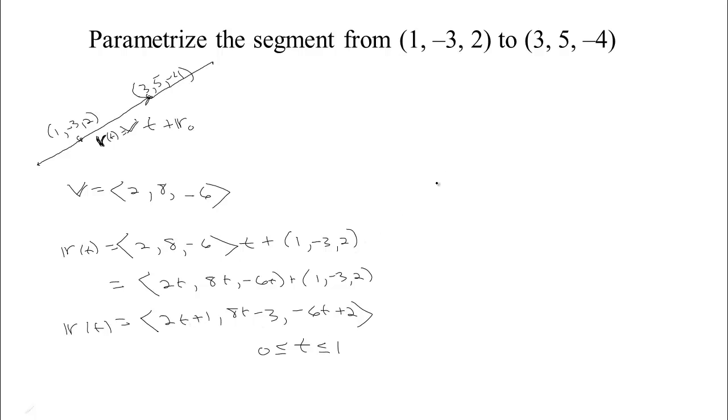So we could say individually, your x-coordinate as a function of t is 2t plus 1, your y-coordinate is 8t minus 3, and your z-coordinate is negative 6t plus 2, with t between 0 and 1. We've got our parametric equations.